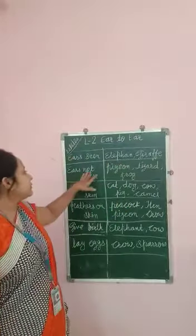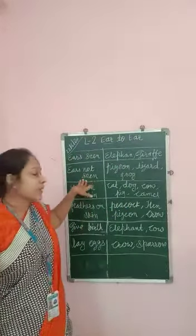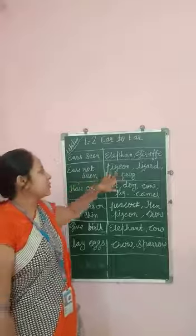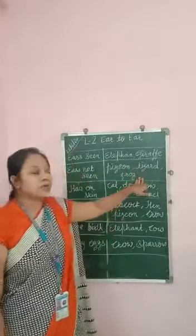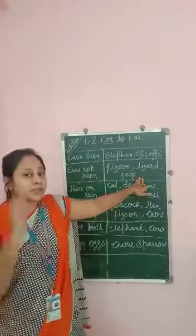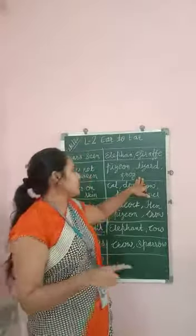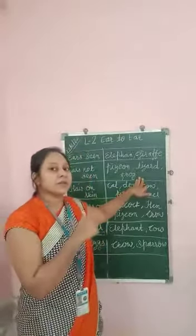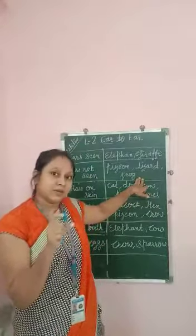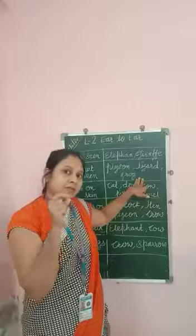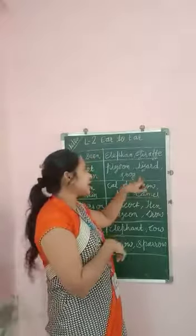Ears we cannot see. Pigeon, lizard, frog — this kind of animal's ears we cannot see. They do have ears. They have tiny holes and with the help of those holes they can hear.